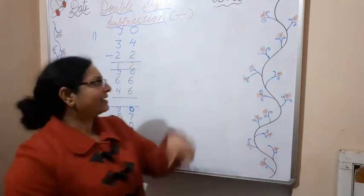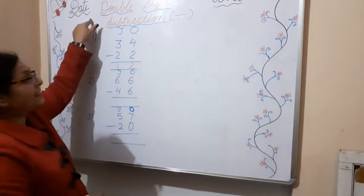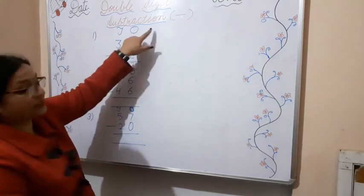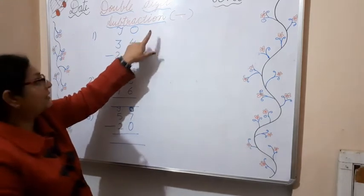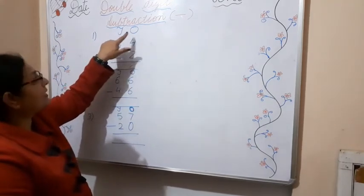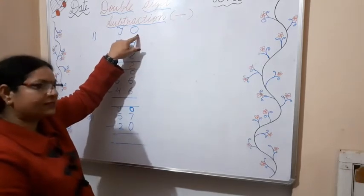Take out your notebooks and write down the date, today's date, heading of the topic: double digit subtraction. Write down T O. T stands for tens and O stands for ones.